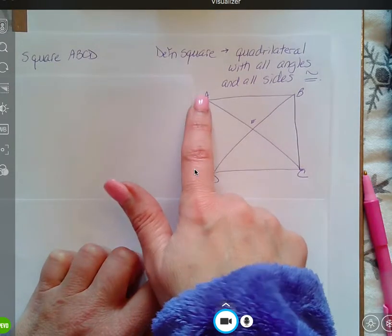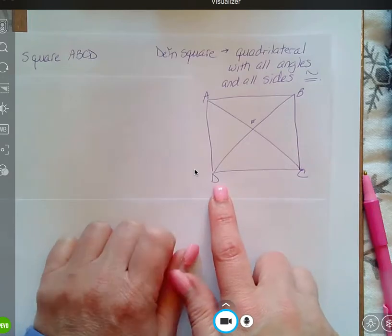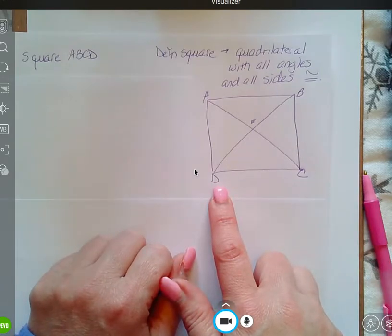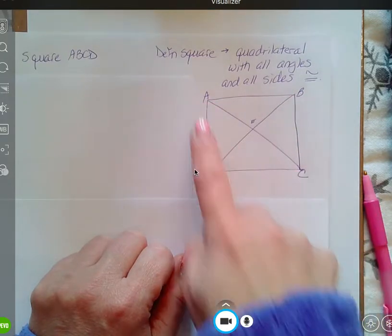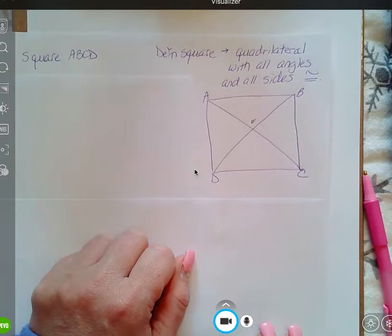So, these angles at A, B, C, and D, all congruent, and all of the sides, top and bottom, left and right, all four sides are congruent.